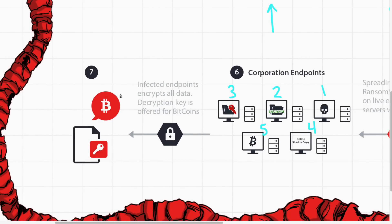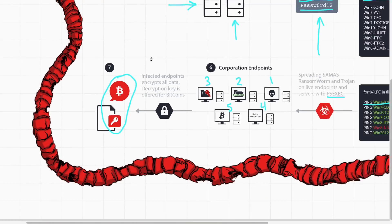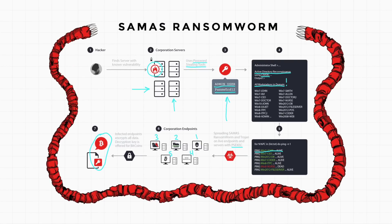The only way the organization can recover its information is to offer a sum of Bitcoin in exchange for the decryption key. So that's the Samus ransomworm. You saw firsthand how only a few built-in commands were used to encrypt the entire organization from the inside. This is the next wave of ransomware, targeting the entire network and using the domain infrastructure against itself.